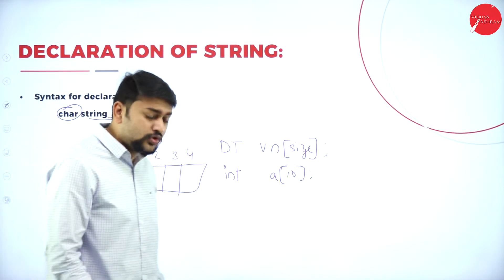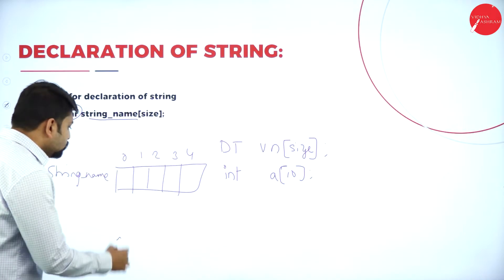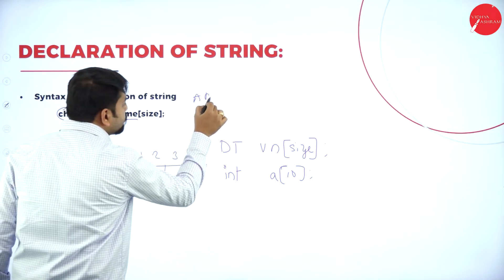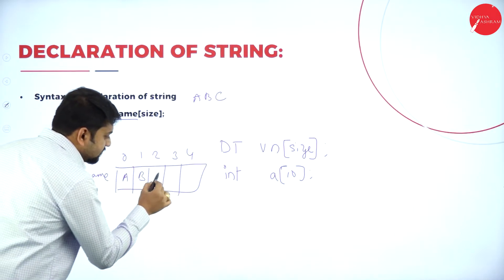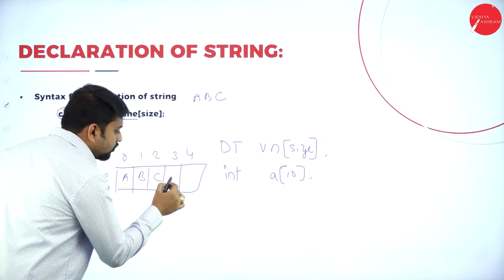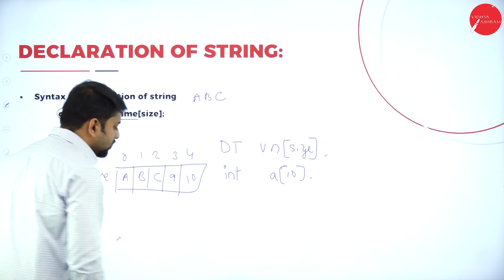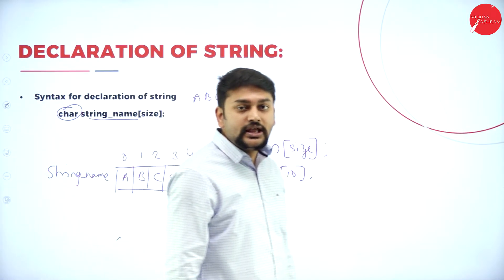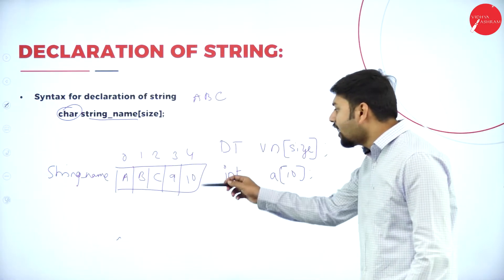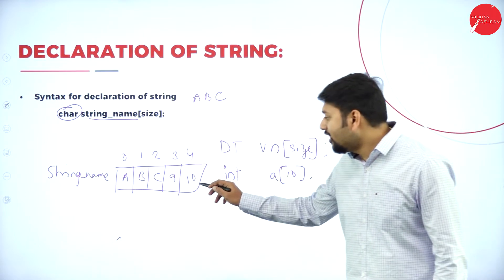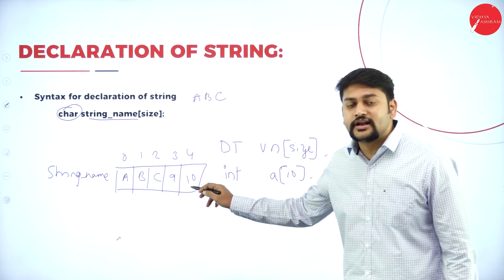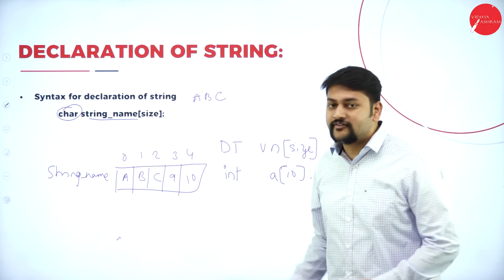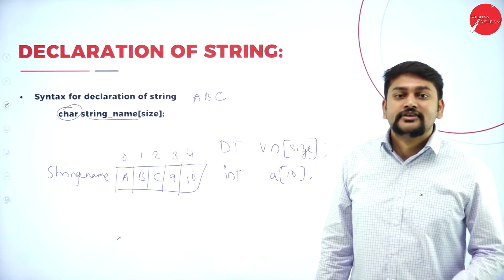This is how the index will look. Imagine I am storing A, B, C — that is my string. So it will be stored as: A, B, C, and then slash zero (\0) at the end. Please don't think that last character is the number 10 — it is slash zero, the null character.